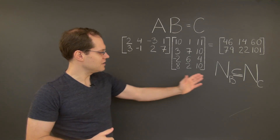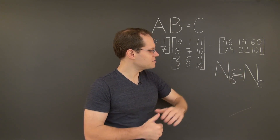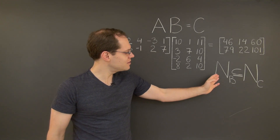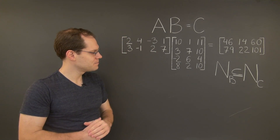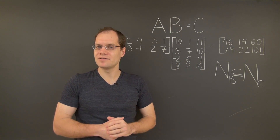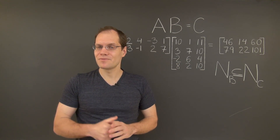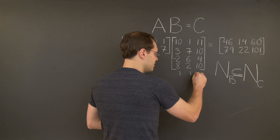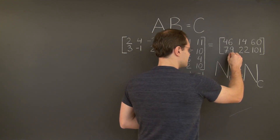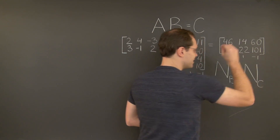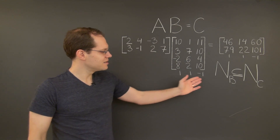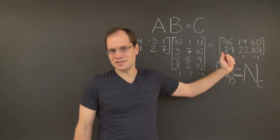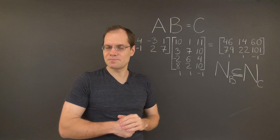Now, can the null space of the matrix C be actually larger than the null space of the matrix B? Because in this particular example, they are the same. They are in both cases 1, 1, negative 1, and 1, 1, negative 1. So in this case, the null space of B equals the null space of C — it is not its proper subspace. But could there be a situation where it is the proper subspace?